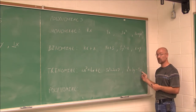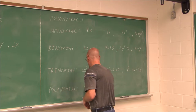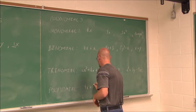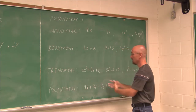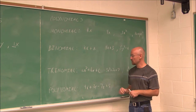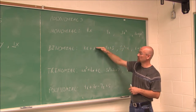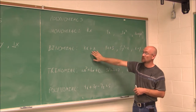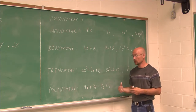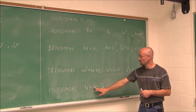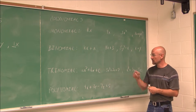For a polynomial with more than three terms, we might have something like 4x plus 3y minus 7z plus 5. We don't have a specific name for more than three, so we just call it a polynomial. They're all actually defined as polynomials, but for the specific cases: one term is a monomial, two terms a binomial, three terms a trinomial, and more than three we generally call a polynomial.